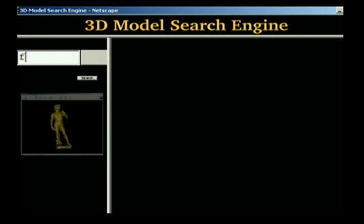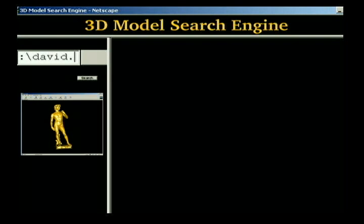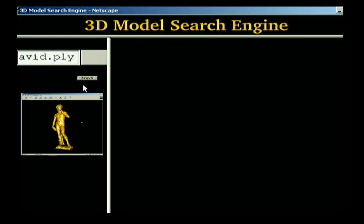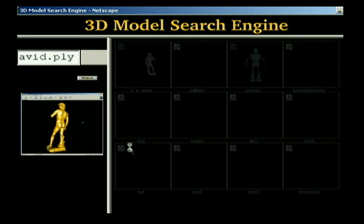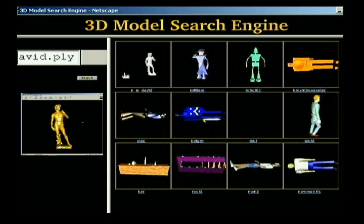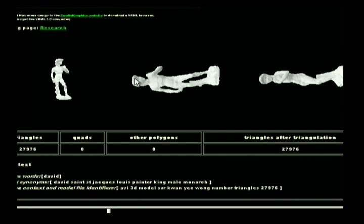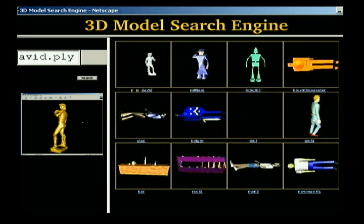Finally, we allow a user to upload a 3D model and search for similar ones. For example, imagine you want to search for illegal copies of your model on the web. Here we search for models similar to the David model scanned by Stanford. The search yields another David model created at Cambridge University, and some other models of people standing in a similar pose.